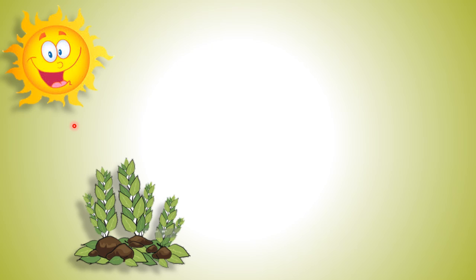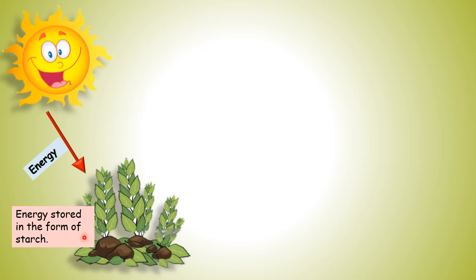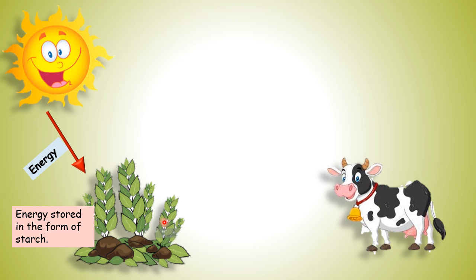Energy in nature is never destroyed — it is only transferred from one living thing to another. The sun is the main source of energy in nature. From the sun, plants take energy directly, and that energy is stored in plants in the form of starch. This energy is then transferred to animals because animals are dependent on plants for their food, and when they eat plants, they are taking energy from plants.